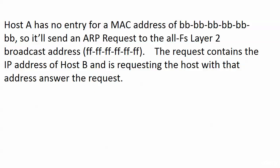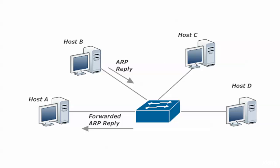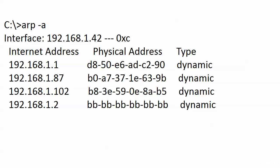That ARP request contains the IP address of host B and asks the host with that address to respond. If we have four hosts connected to a switch, the layer 2 broadcast comes into the switch and gets forwarded out every port except the one it came in on. Hosts C and D will look at it and say, I'm not 192.168.1.2, so I don't care — and discard it. Host B will say, I'm 192.168.1.2, and send an ARP reply straight back to the original requester. Host A gets the forwarded ARP reply from the switch, and at that point host A has both the IP address and MAC address of host B and can start sending data.